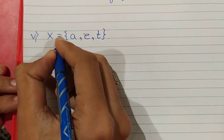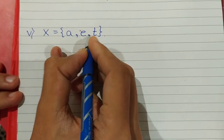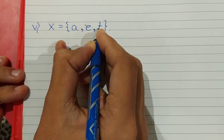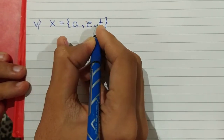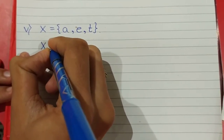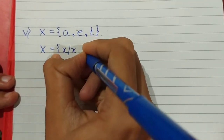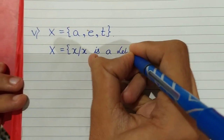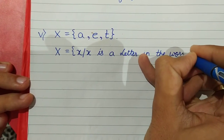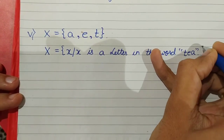Let's see the next example. X is equal to {A, E, T}. All these elements are letters from the English alphabets and they belong to the word 'eat'. So let's see how to write it in set builder form: X = { x such that x is a letter in the word "eat" }. 'Eat' has to be written in double inverted commas. Thank you.